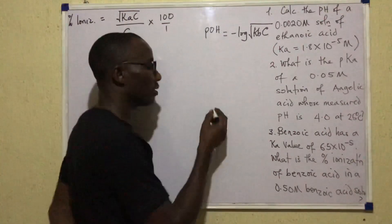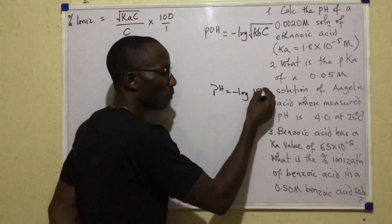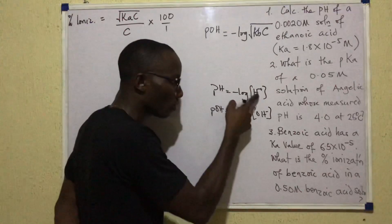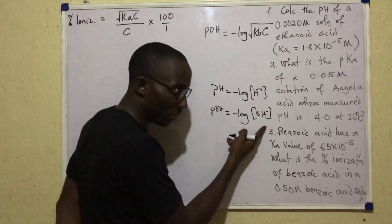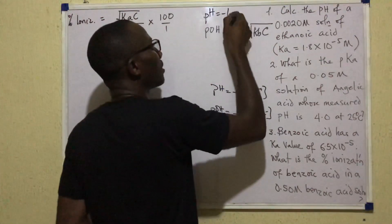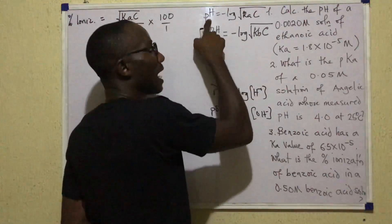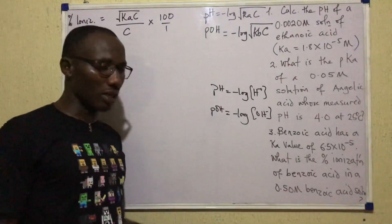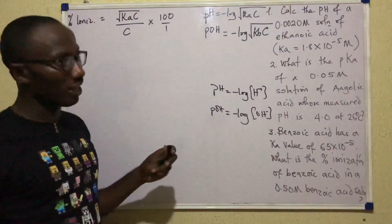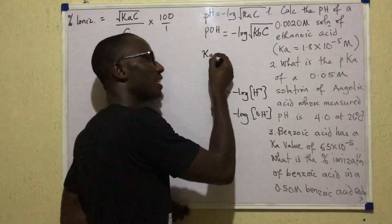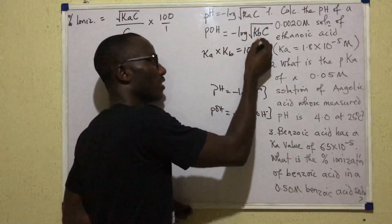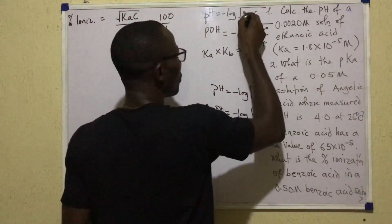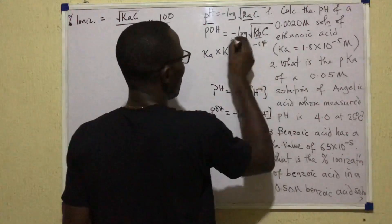Just as pH relates to H+ and pOH relates to OH-, acid formulas use Ka to give pH, and base formulas use Kb to give pOH. So when applying formulas, remember: Ka gives pH, and Kb gives pOH. If you need Ka and are given Kb, or vice versa, you can use the Ka × Kb = 10⁻¹⁴ relationship to convert.